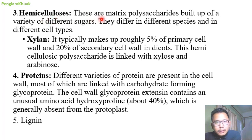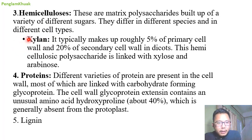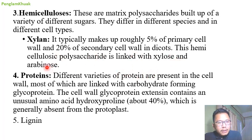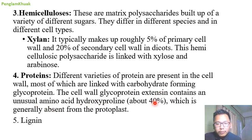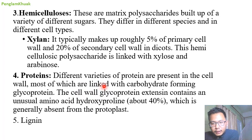Hemicellulose are mixed polysaccharides built up of a variety of different sugars — they differ in different species and cell types. Xylans also constitute some amount of cell wall — that is 5 percent of primary cell wall and 20 percent of secondary cell wall in case of dicots. Hemicellulose polysaccharides are linked with xylose and arabinose. Proteins are also important — the cell wall glycoprotein extensin contains the unusual amino acid hydroxyproline, about 40 percent, which is generally absent from the protoplast. Lignin is also deposited in the plant cell wall.